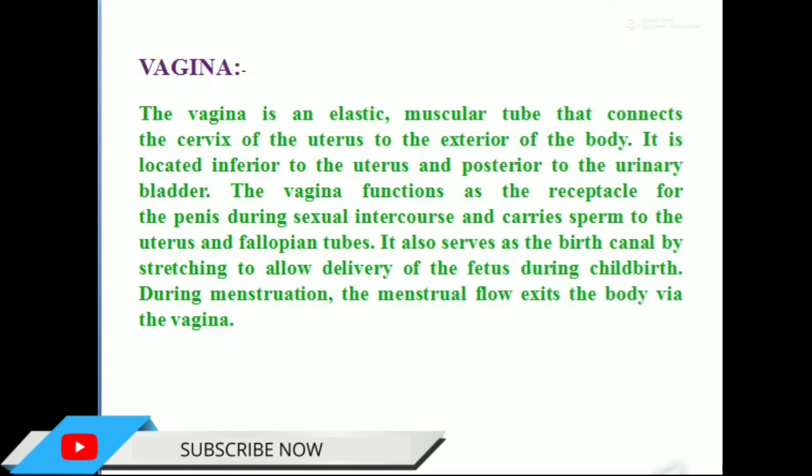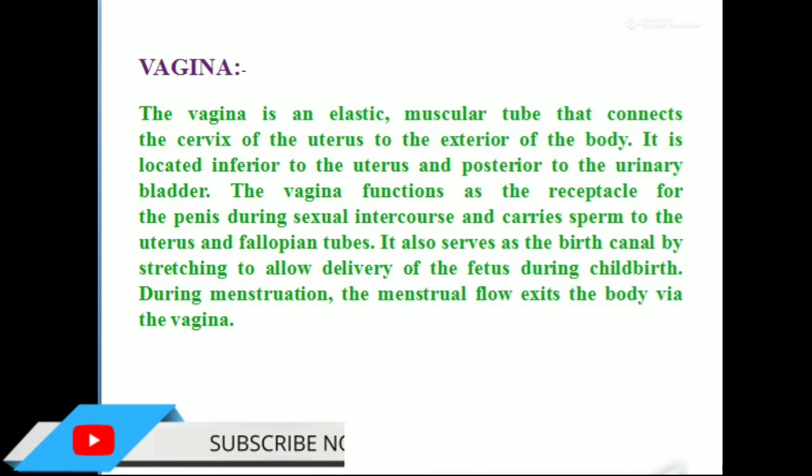This is all about the first part of the female reproductive system. In my next video, I will discuss the transverse section of the ovary — what kinds of follicles are present, how many types of follicles are in the ovary, and how the secondary oocyte or Graafian follicle looks. If you like the video, please like, share, comment, and don't forget to subscribe to my channel.